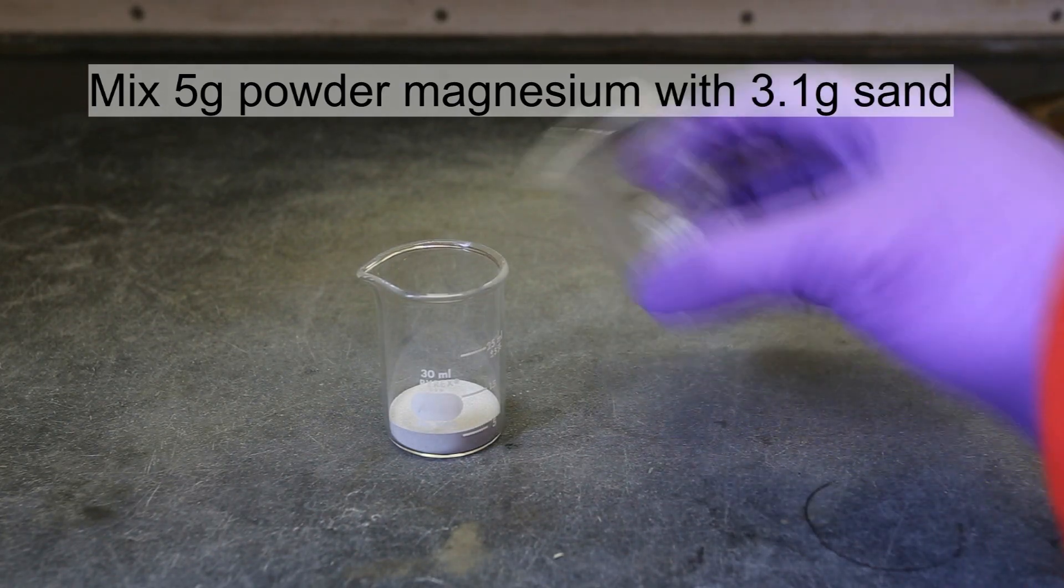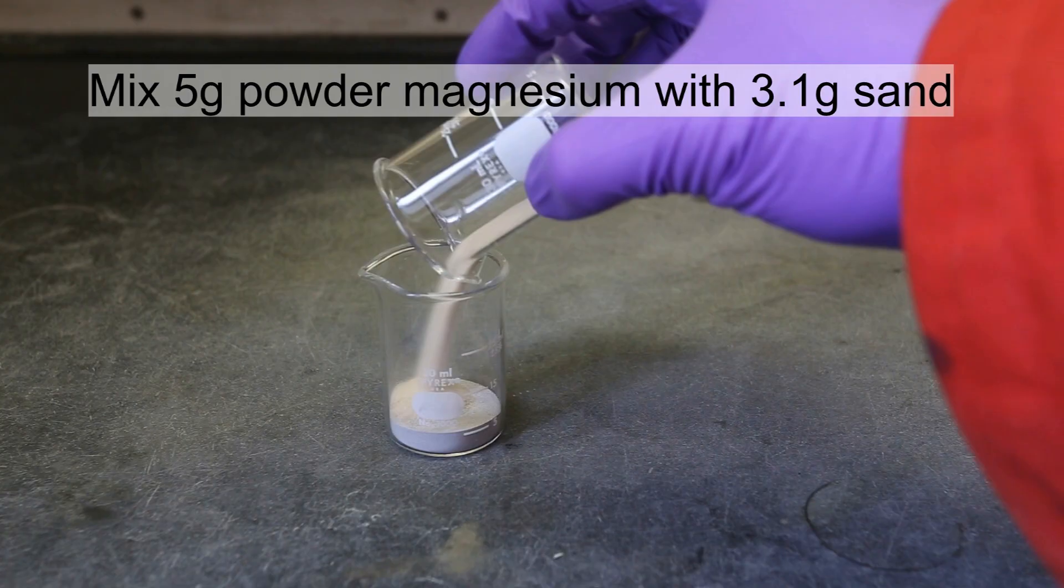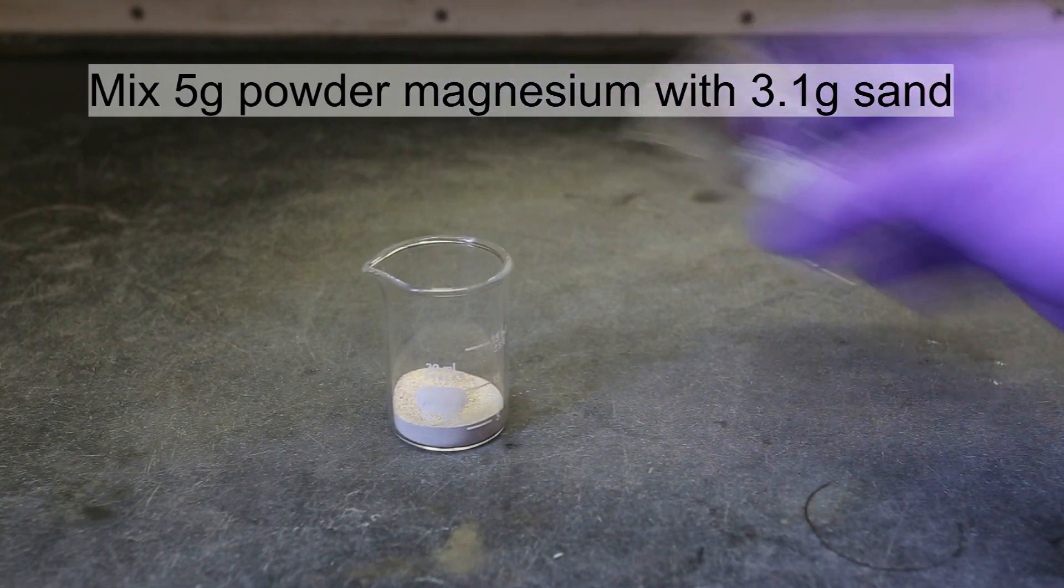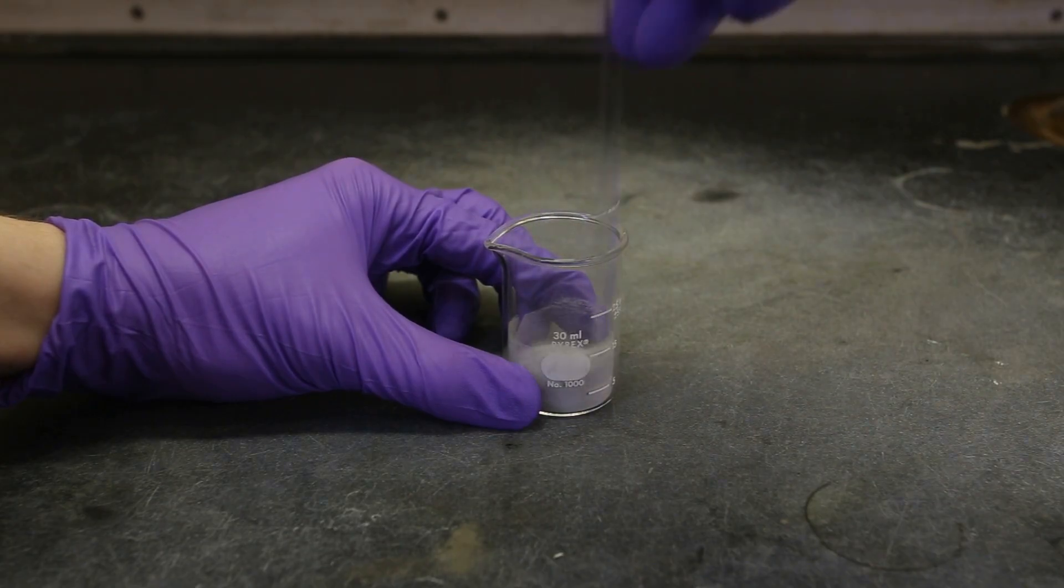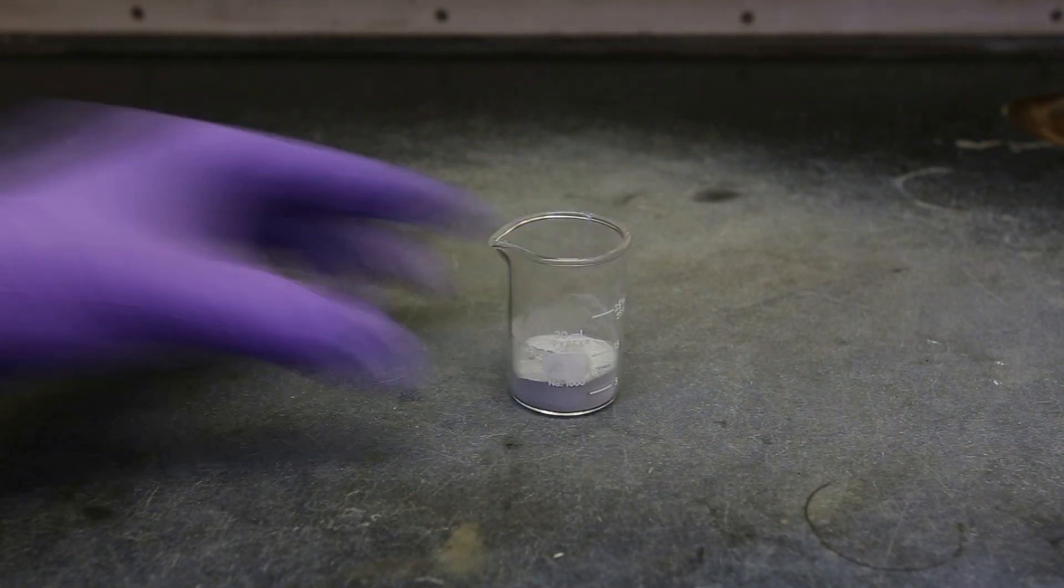First, mix about 3.1 grams of sand with about 5 grams of magnesium powder. Then, using something like a glass rod, mix the sand and the magnesium powder together thoroughly.